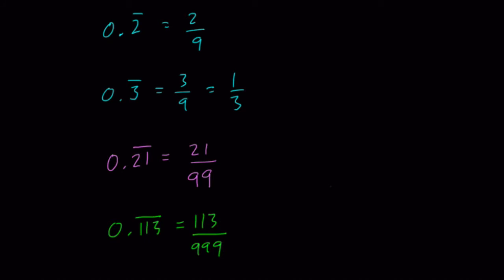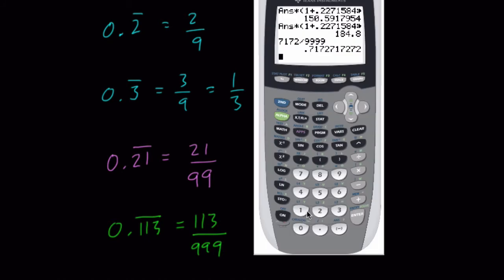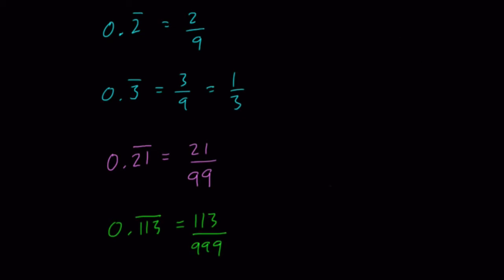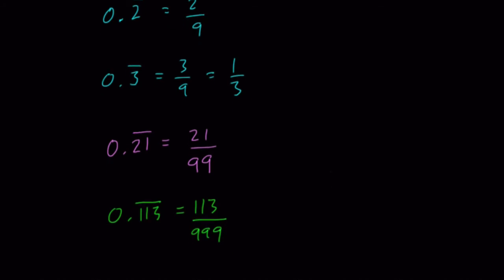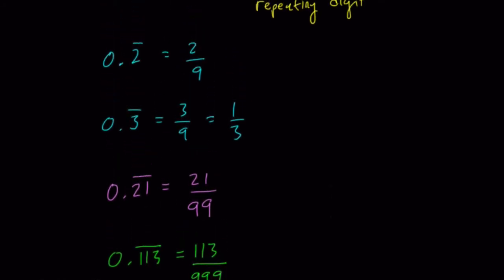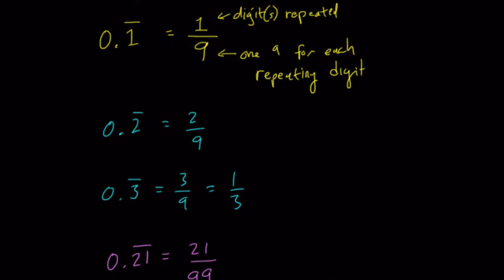And you can test these out in your calculator, right? 113 divided by 999 is 113 repeating, and so forth. There's an algebraic proof for this. It's not too complex. I don't want to show it here, but this is the basic idea of how we do this.